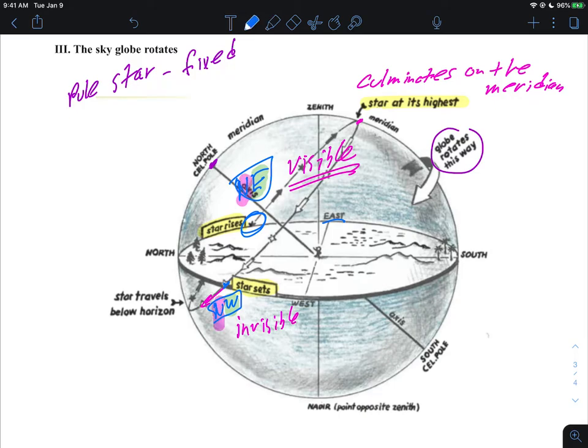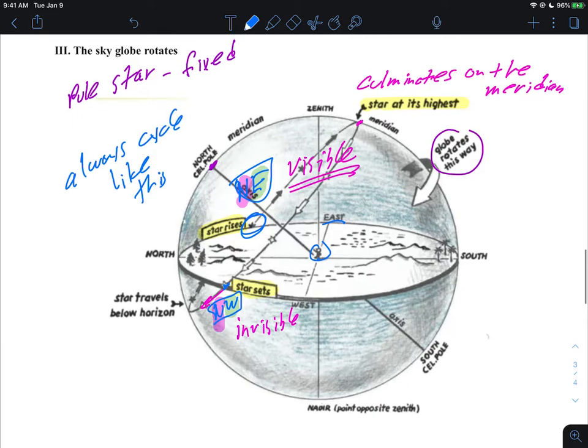The star, the way it moves if I'm at this position, will always be like this. So long as I maintain that position and I don't move, this star will always cycle like this. In other words, as I watch it, it'll never suddenly start rising over here. It'll always reach exactly the highest point, set there and rise there, and that sort of thing.